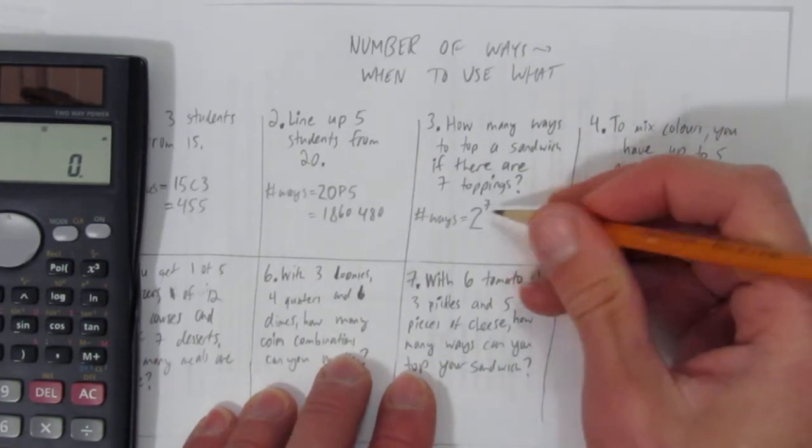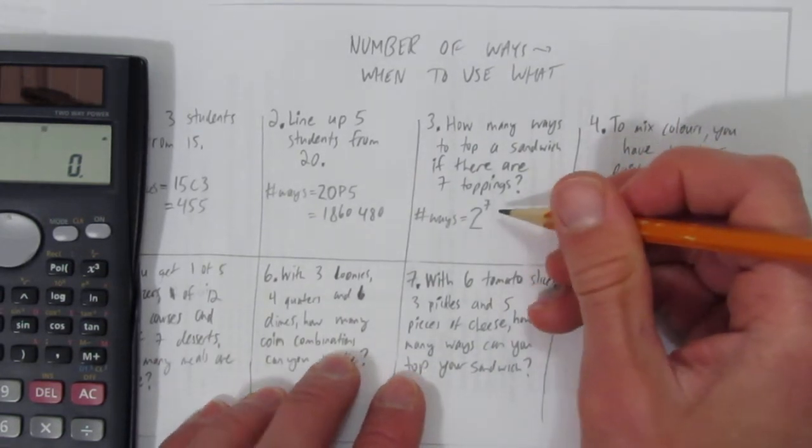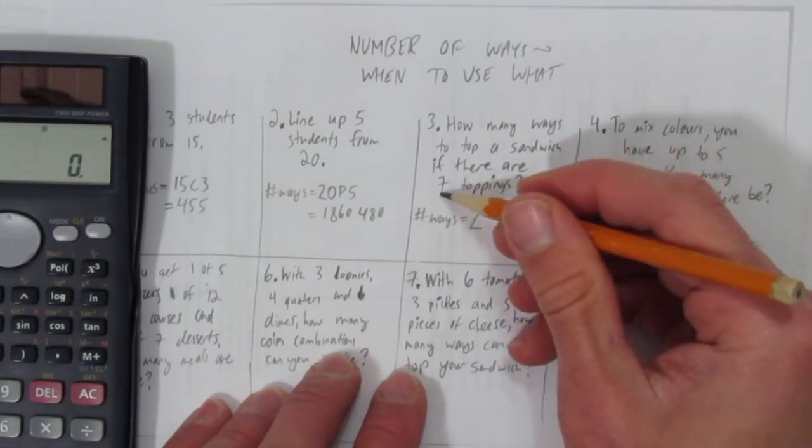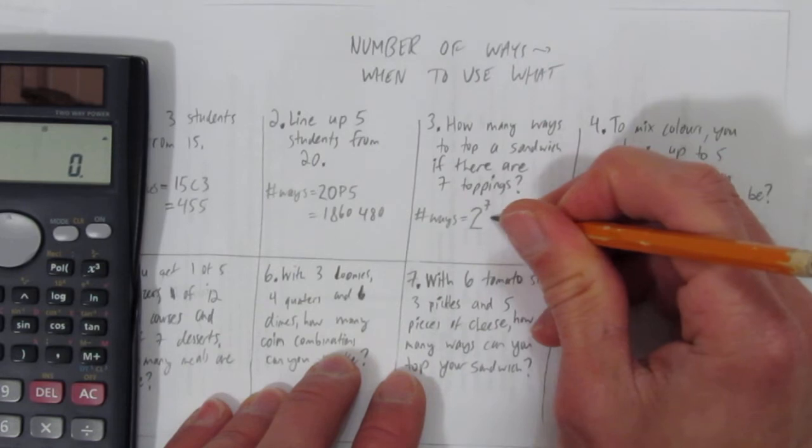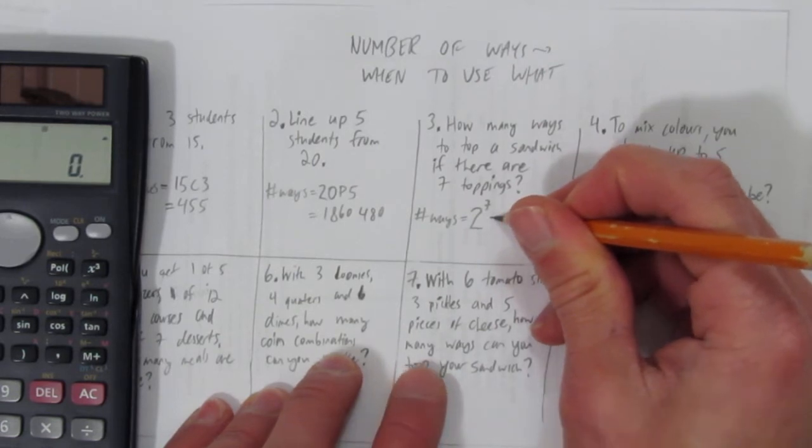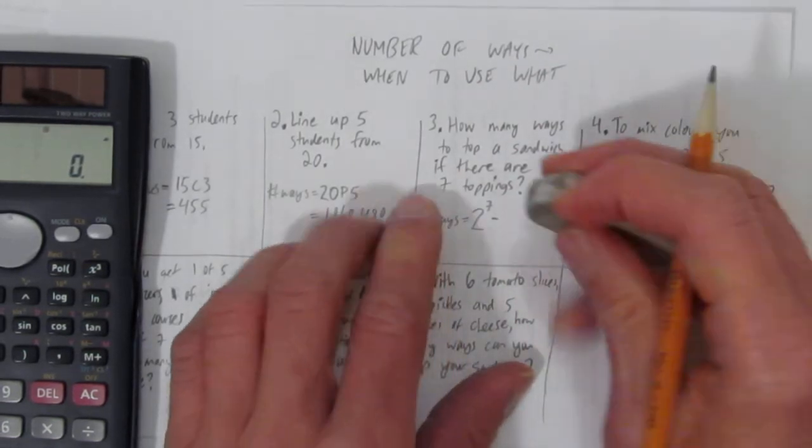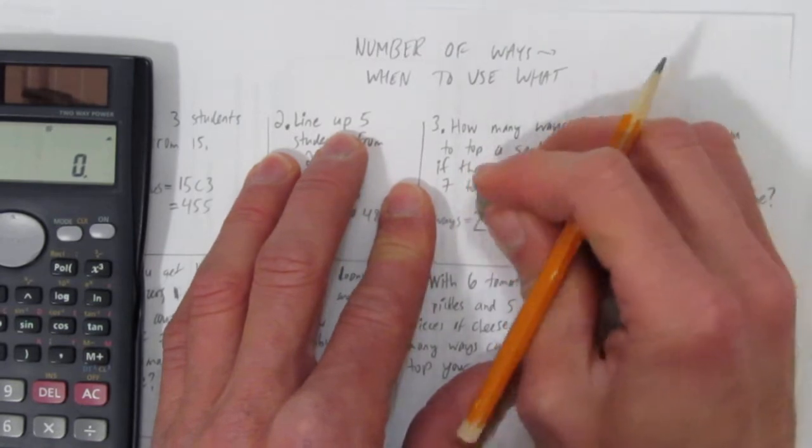You also have to ask yourself, can you have no toppings? The answer is yeah, of course. You can choose none of the first topping and none of the second topping and so on. We have to take away one when you can't have no toppings, but here it's fine.